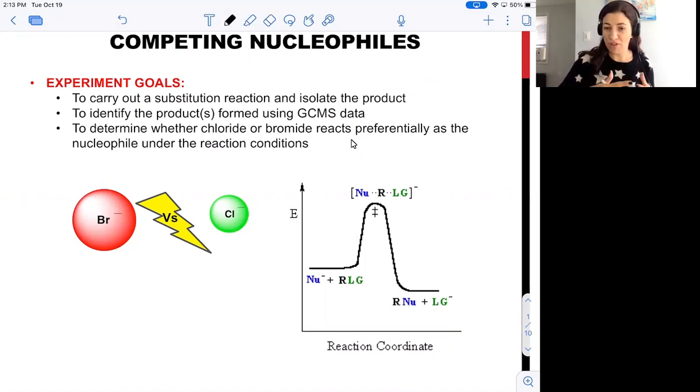We're going to be using two nucleophiles which will potentially react with our substrate through a substitution reaction. Our goal is to determine whether one of the nucleophiles preferentially reacted with the substrate. In order to do so, we're going to use gas chromatography mass spectrometry to analyze the products produced.